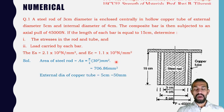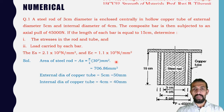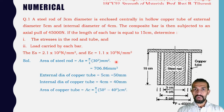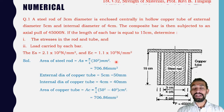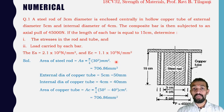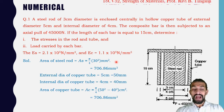The external diameter of the copper tube is 50 mm and internal diameter is 40 mm. Area of copper tube = π/4 × (50² − 40²) = 706.86 mm². It is a coincidence that both areas are equal.